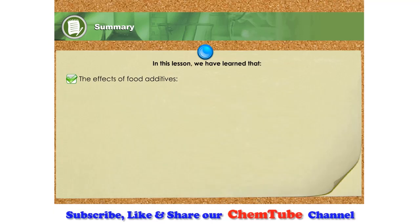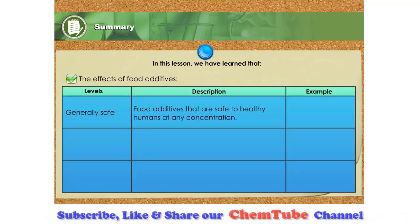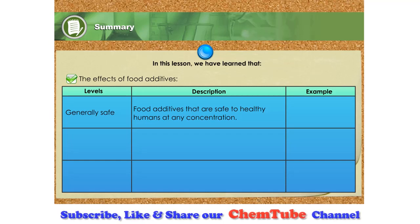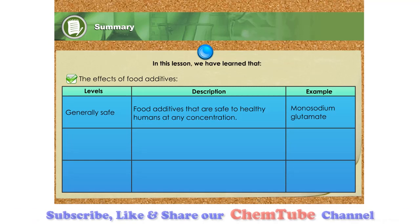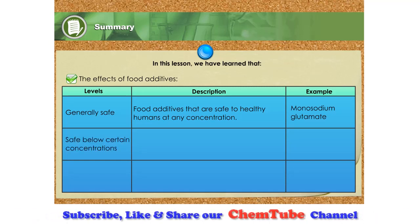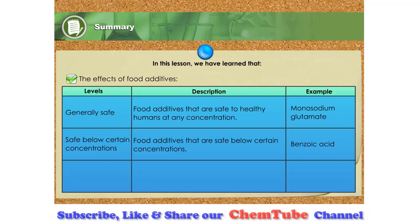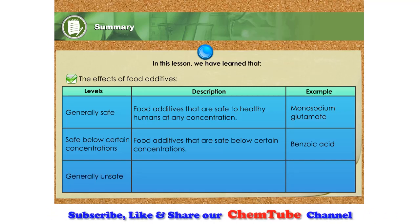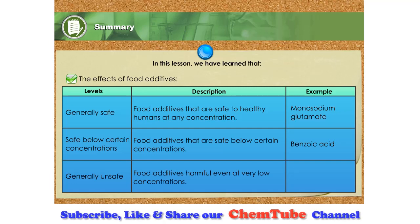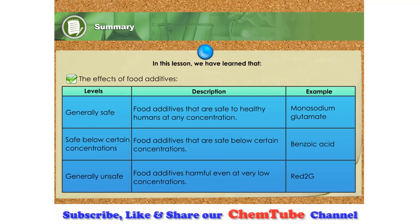The effects of food additives can generally be divided into three levels. Generally safe: food additives that are safe to healthy humans at any concentration — an example is monosodium glutamate. Safe below certain concentrations: food additives that are safe below certain concentrations — benzoic acid is an example. Generally unsafe: food additives harmful even at very low concentrations — Red 2G is a food dye that is carcinogenic and is banned in many countries.